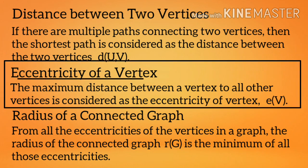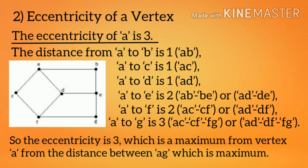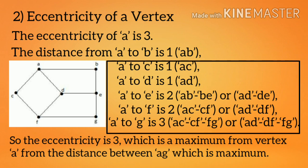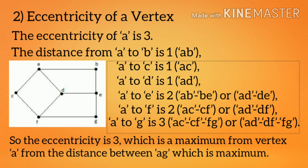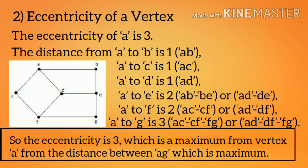Eccentricity E(V) of a vertex: the maximum distance between a vertex and all other vertices is considered as the eccentricity of vertex E(V). For example, the eccentricity of vertex A is 3. Distance from A to B is 1, A to C is 1, A to D is 1, A to E is 2, A to F is 2, A to G is 3. The distance between A and G is maximum, giving eccentricity 3.